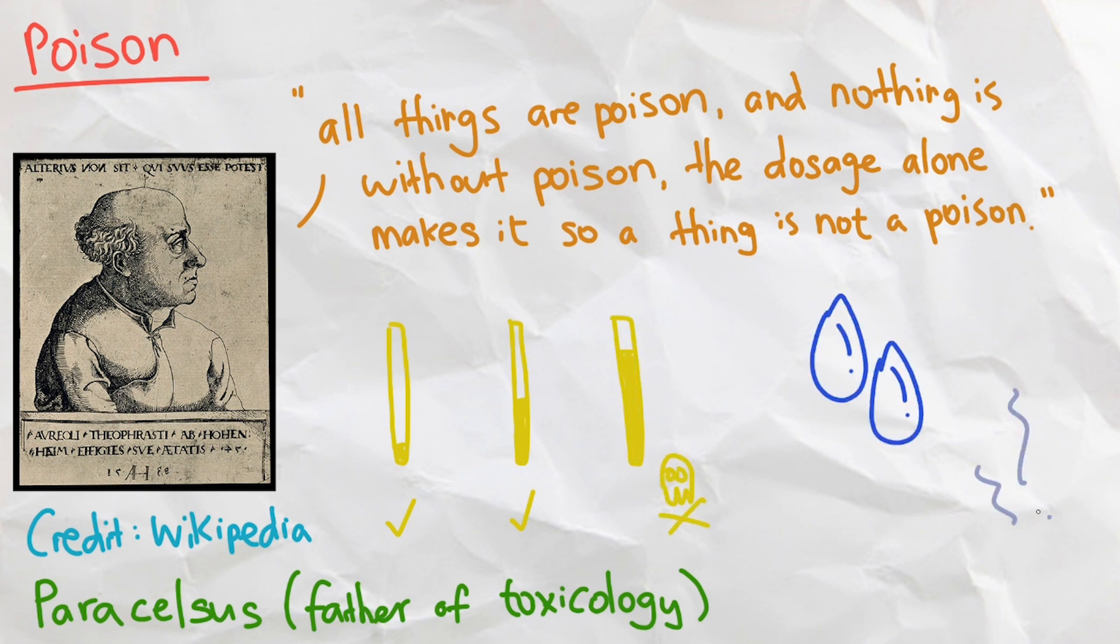Since anything can be poisonous, there isn't a specific poison that kills you. Different things kill you in different ways depending on how much you ingest. Let's go over a few examples.